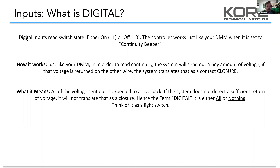In a control system, digital inputs — when you hear something referred to as digital, that just means it's a state of either on or off. It's a switch, basically. In the digital world, one is on and zero is off, just like your meter is going to read continuity. It's either go or no-go, it's either on or off. It's a relay.